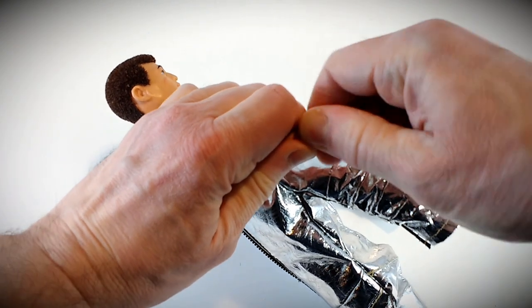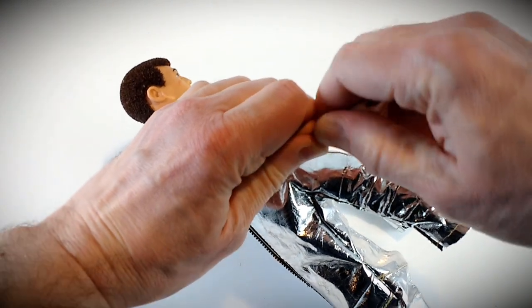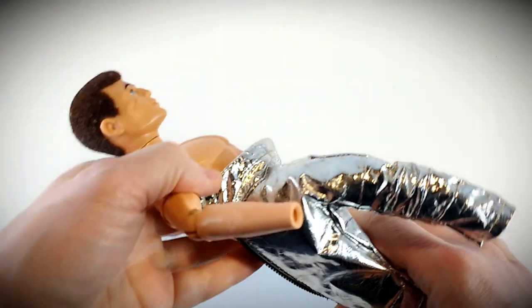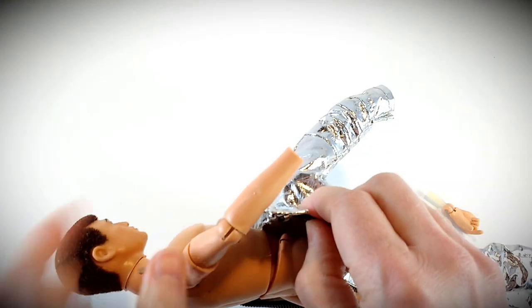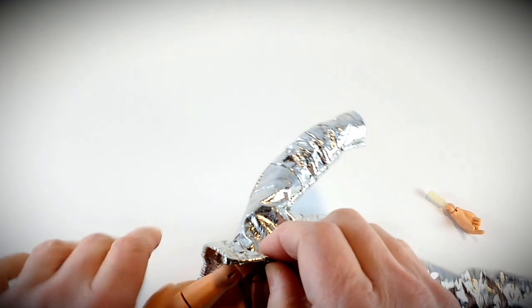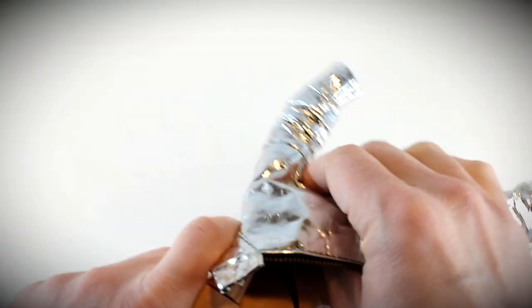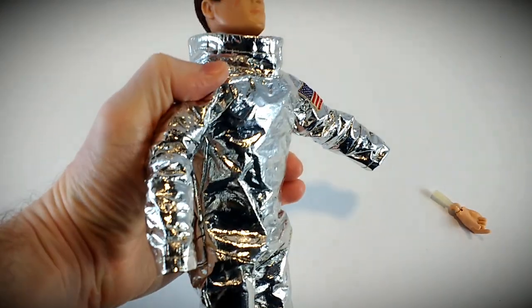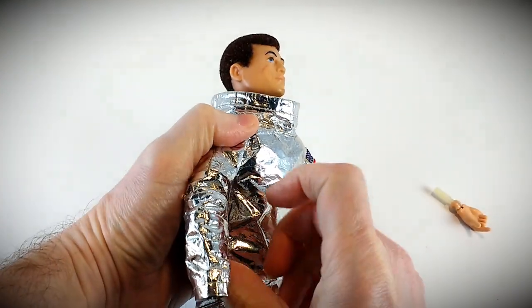A way that I've found to make things a little bit easier to get the spacesuit onto the figure is I just unplug the hand from the forearm and slide the arm down through the sleeves and then put the hands back on because of the stiffness of that spacesuit and just this kind of fear that something's going to rip or tear in there.